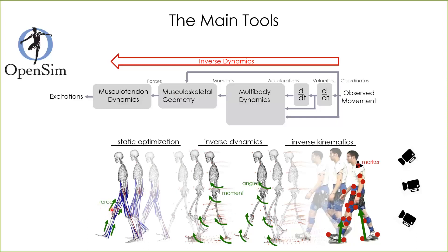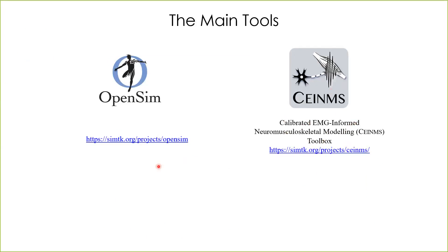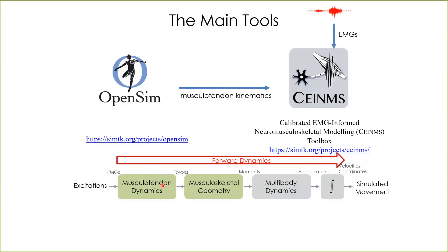The second software tool is CINEMES — the Calibrated EMG-Informed Neuromusculoskeletal Modeling Toolbox. It is an open source toolbox available on CIMTK.org, just like OpenSim. In this webinar, I will use CINEMES to perform forward dynamic simulations, starting from measurements of muscle excitations derived from EMG signals, combined with muscle tendon kinematics obtained directly from OpenSim. CINEMES uses these inputs to simulate all transformations from the onset of muscle excitation to the production of mechanical force in muscles and joints.